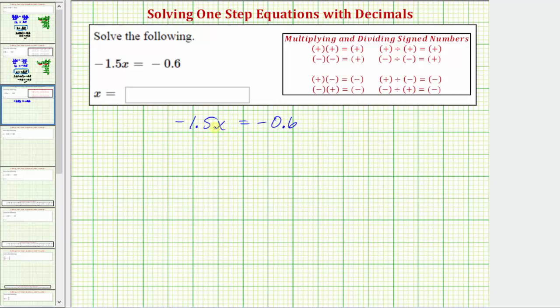Negative 1.5x means negative 1.5 times x, and therefore the solution to the equation is the value of x that makes the product on the left equal to negative 0.6.